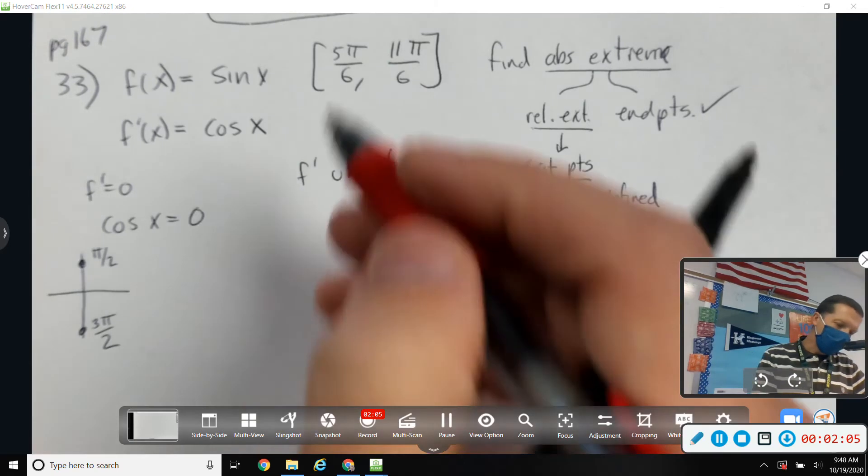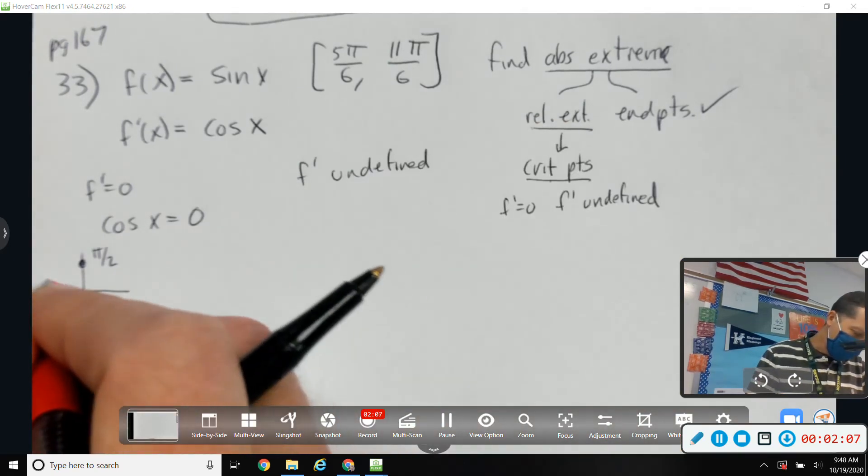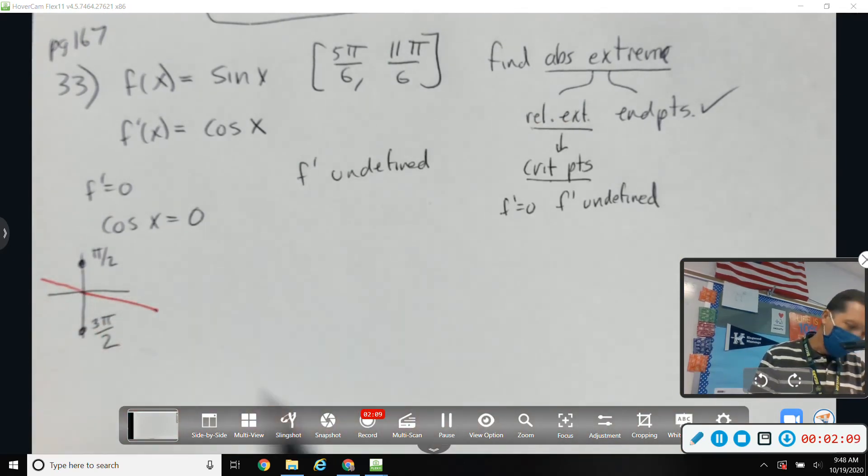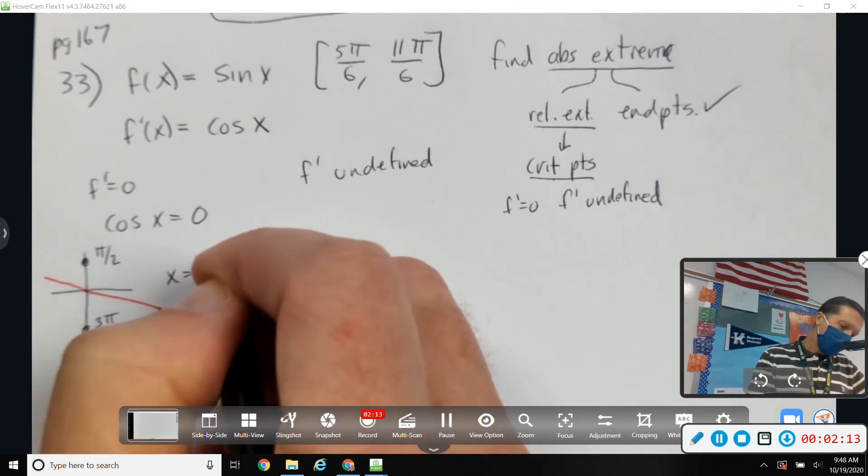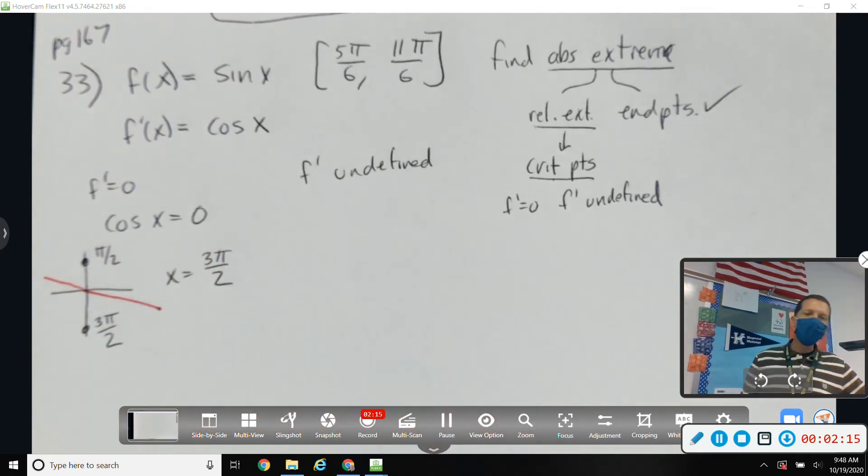But we are restricted to looking between five pi over six and eleven pi over six. So three pi over two is our only critical number from where cosine is zero.